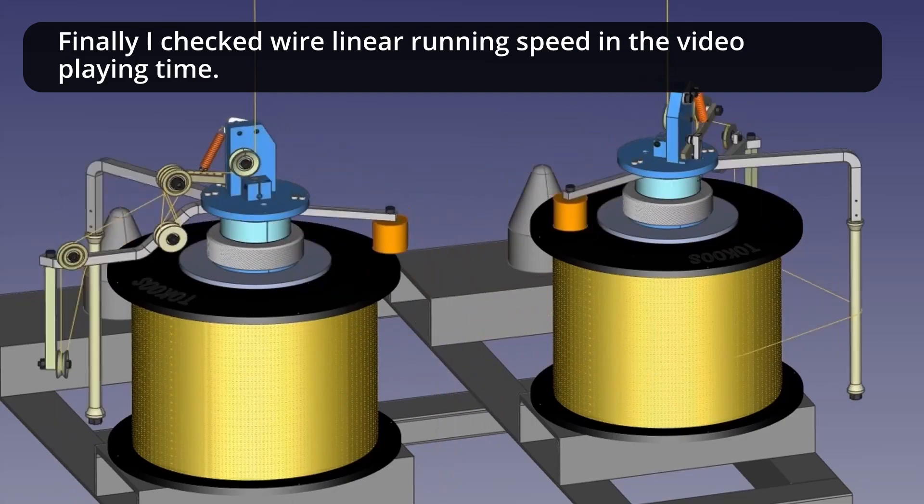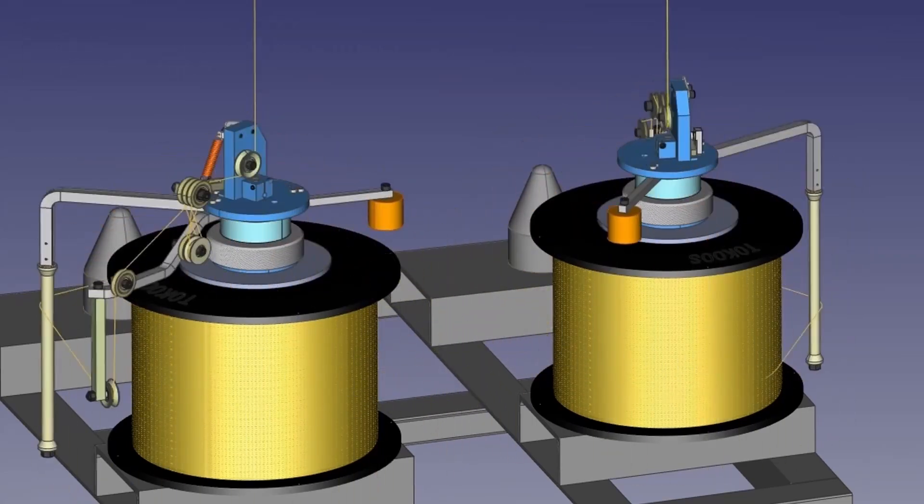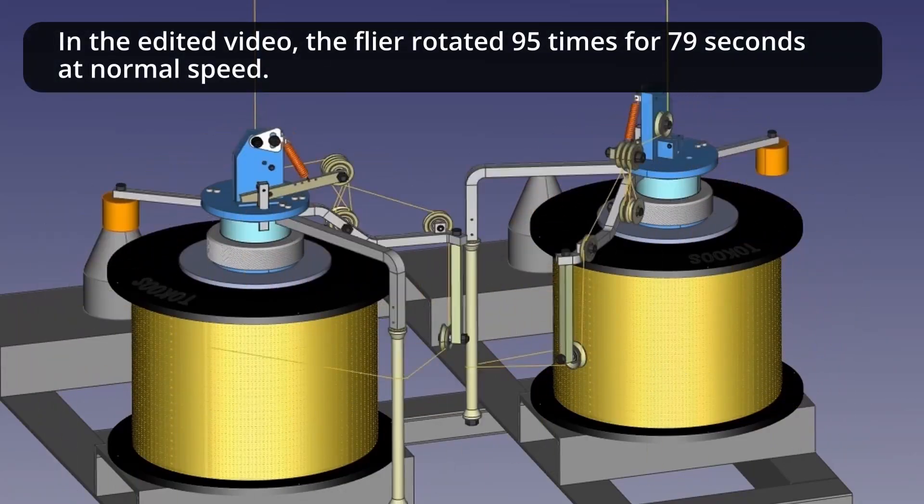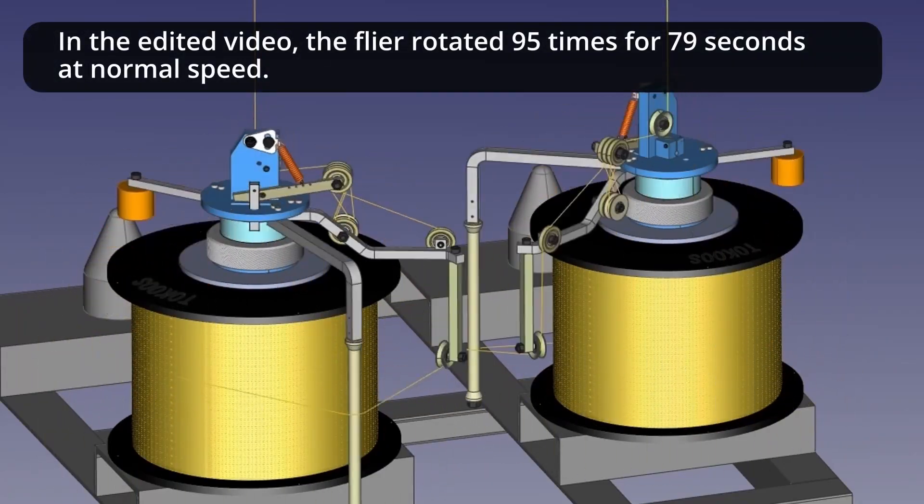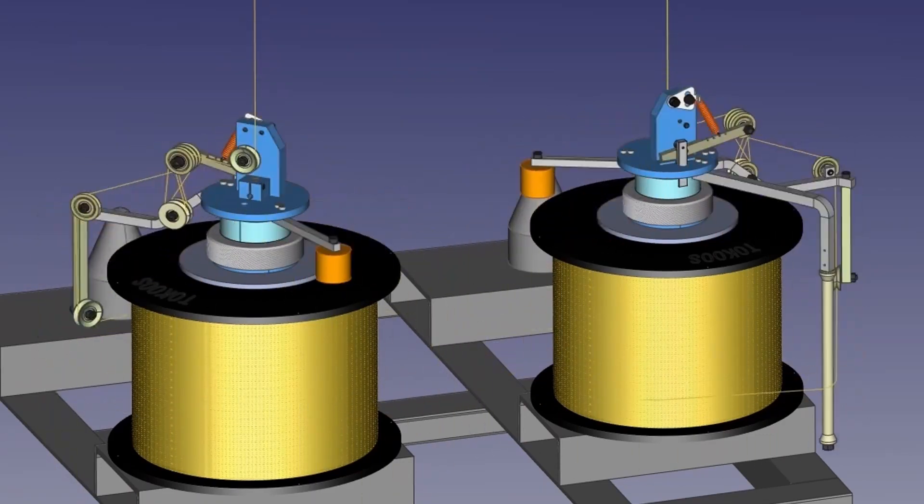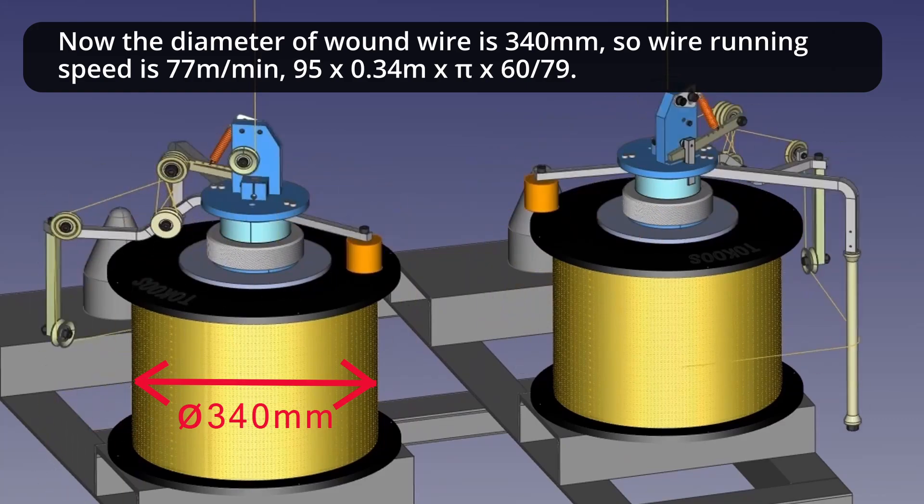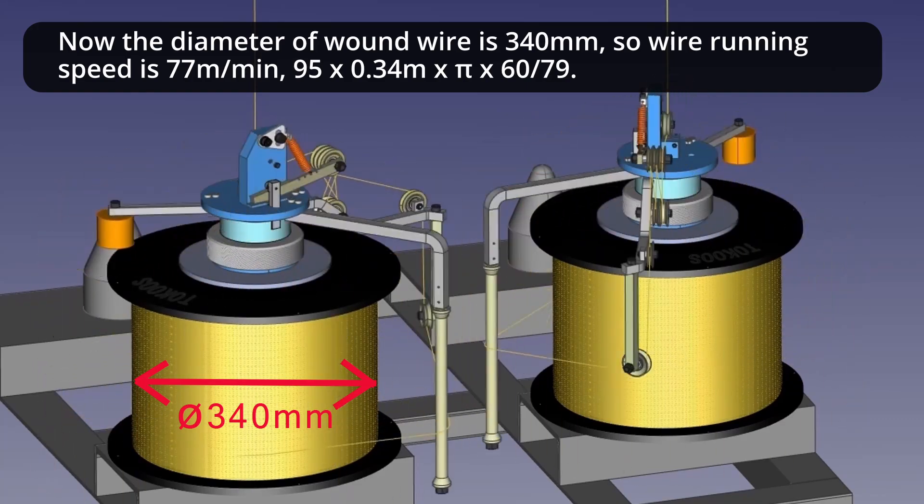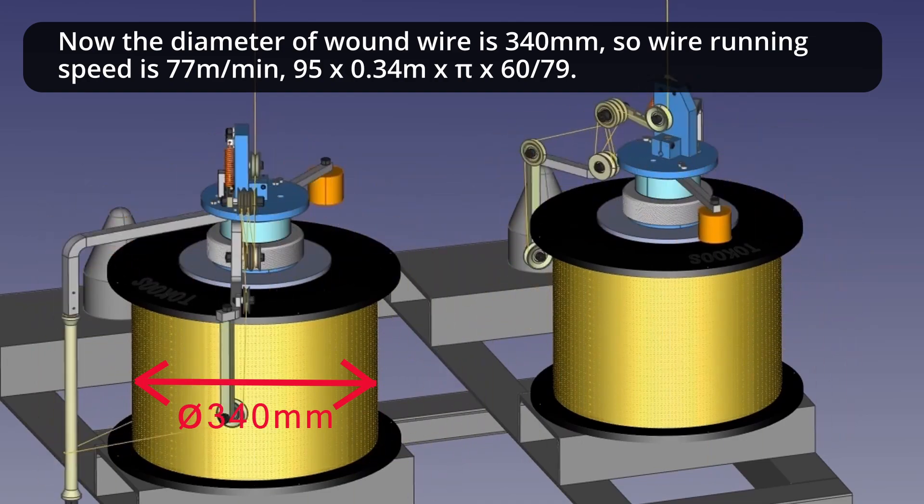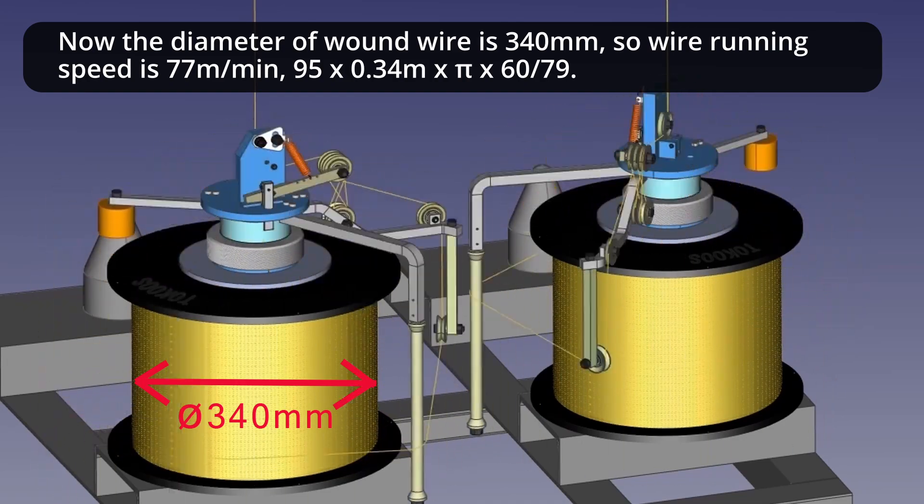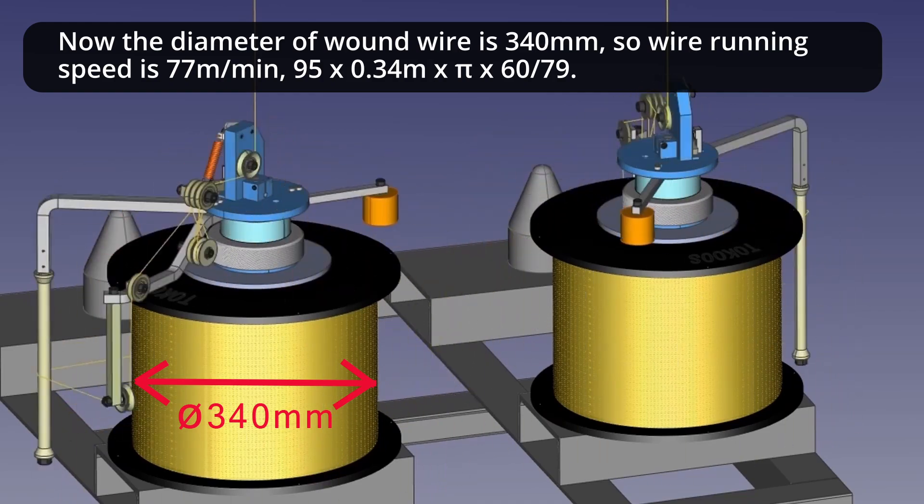Finally, I checked wire linear running speed in the video playing time. In the edited video, the flyer rotated 95 times for 79 seconds at normal speed. Now the diameter of wound wire is 340 millimeter, so wire running speed is 77 meters per minute, that is, 95 times 0.34 meter times pi times 60 divided by 79.